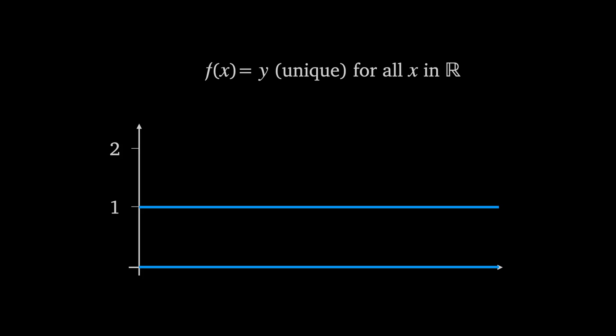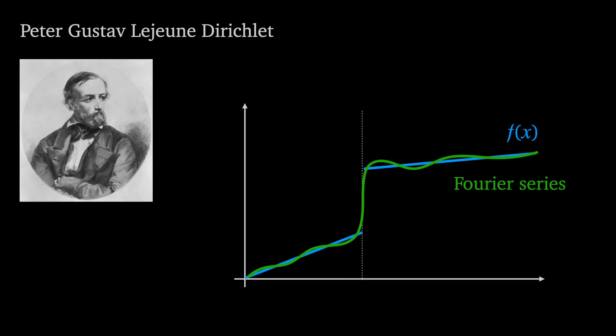The thing is this function isn't continuous anywhere on the real line. In the 1820s Peter Gustave Lejeune Dirichlet was thinking about what happens to Fourier series at discontinuities.